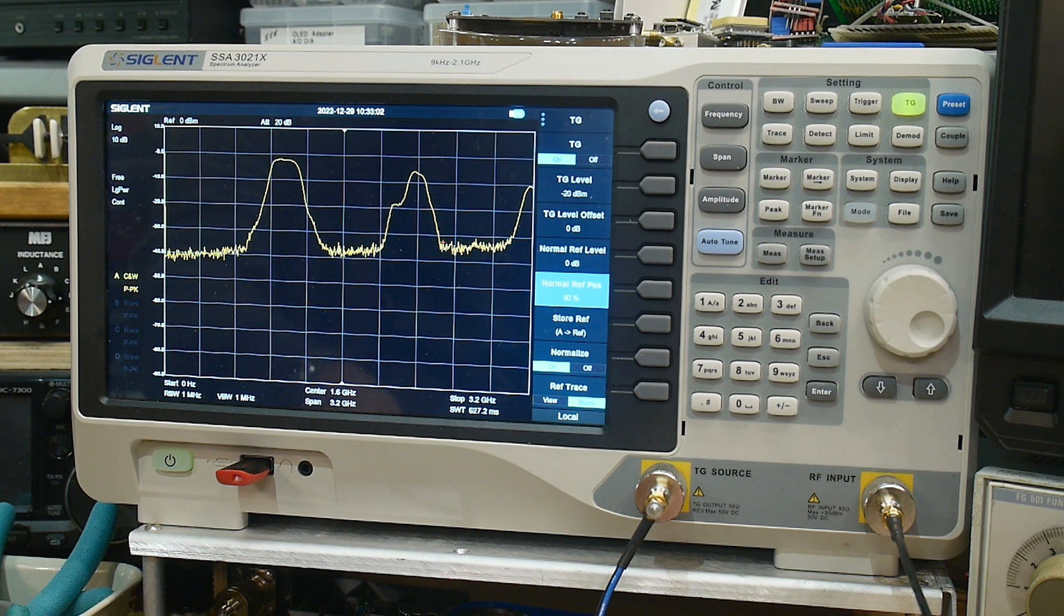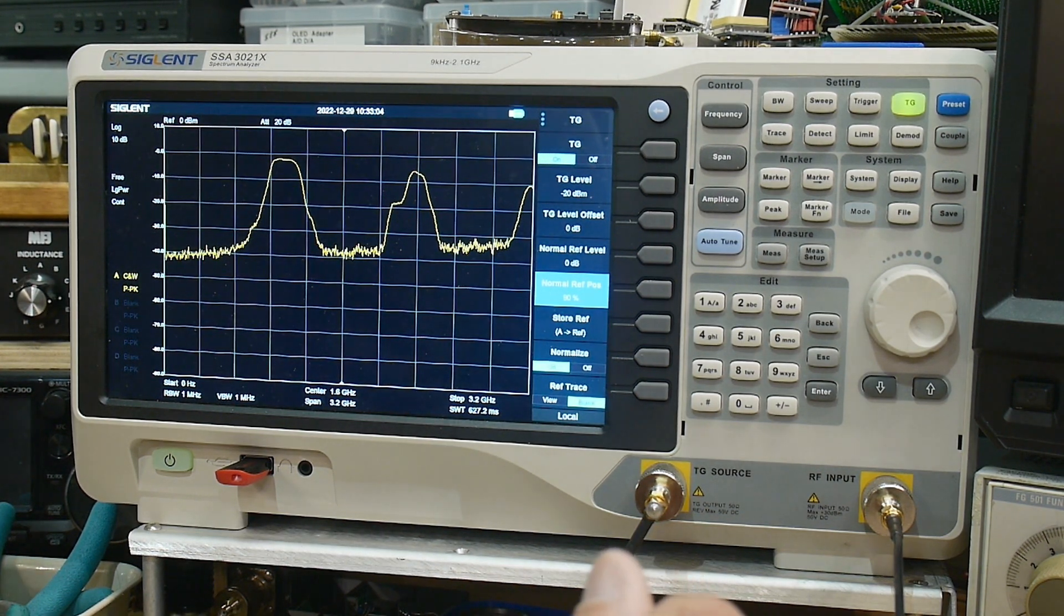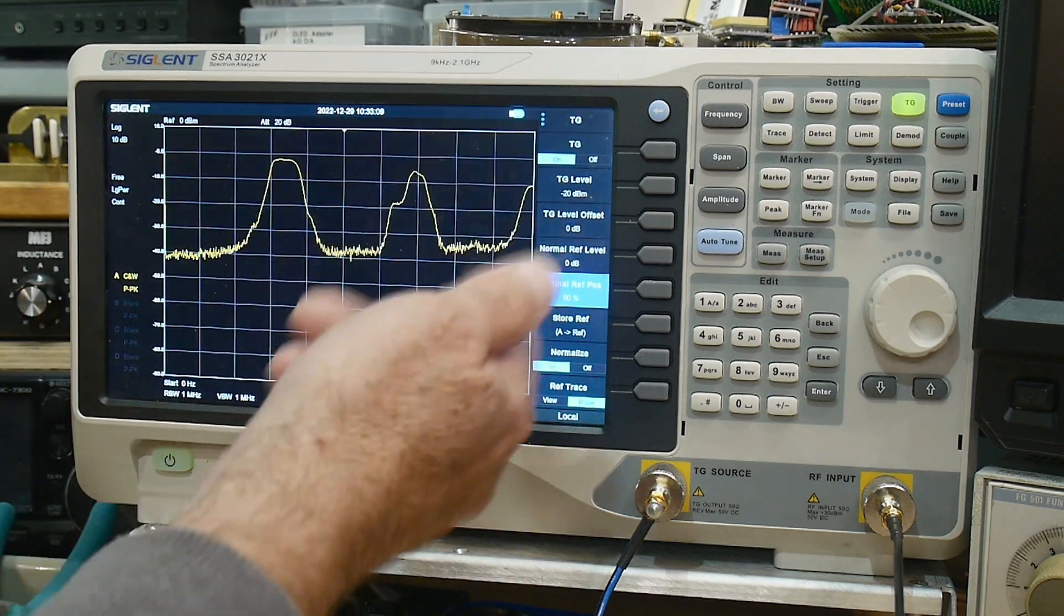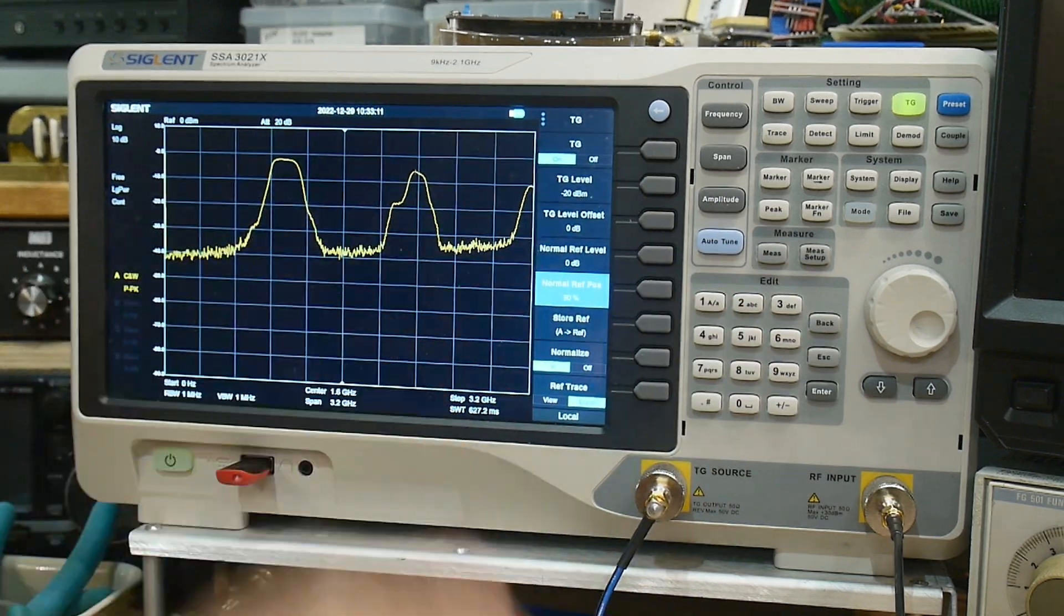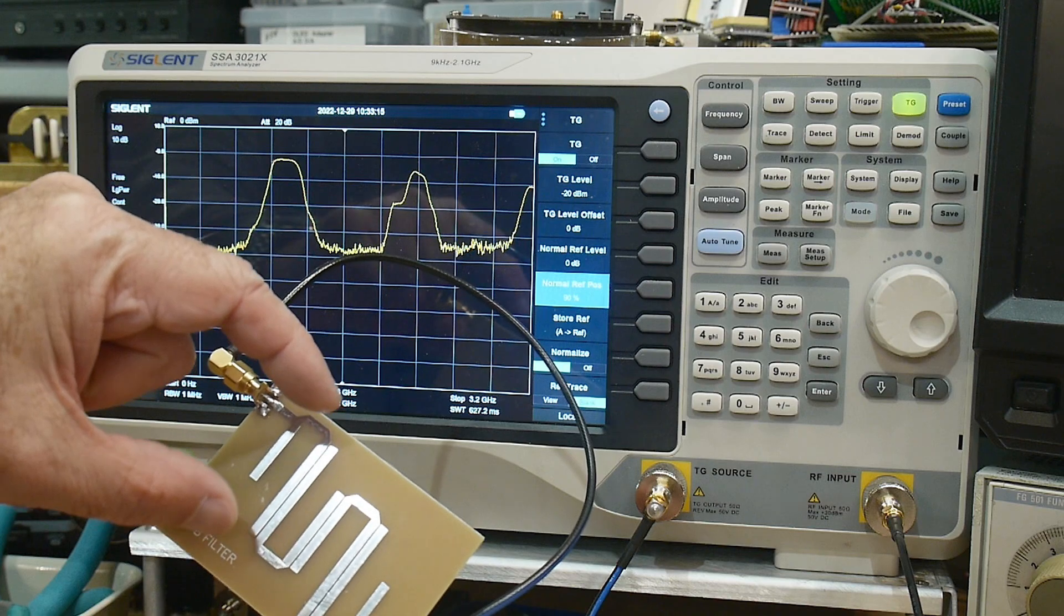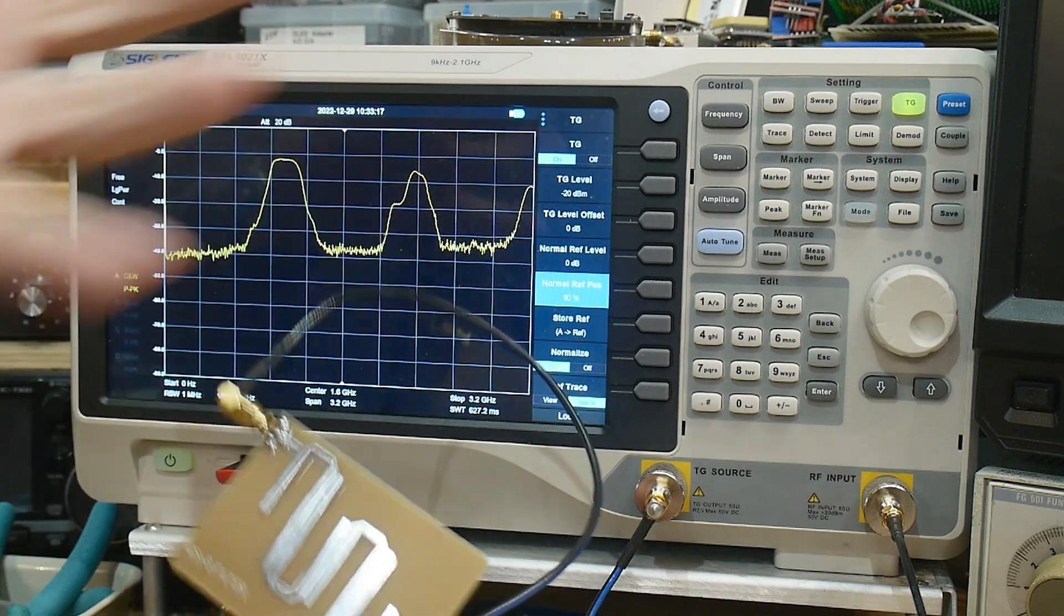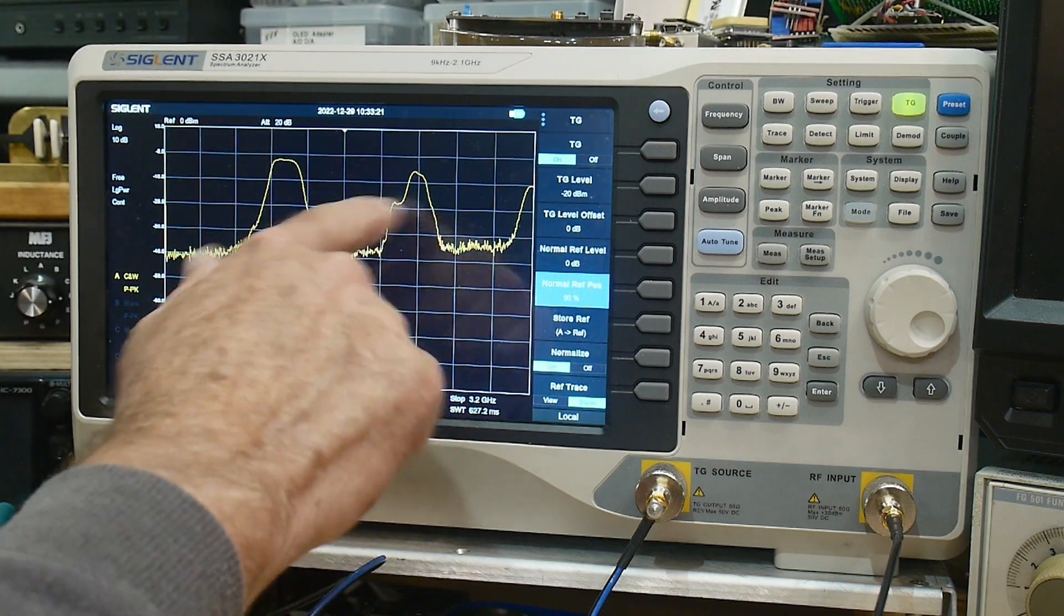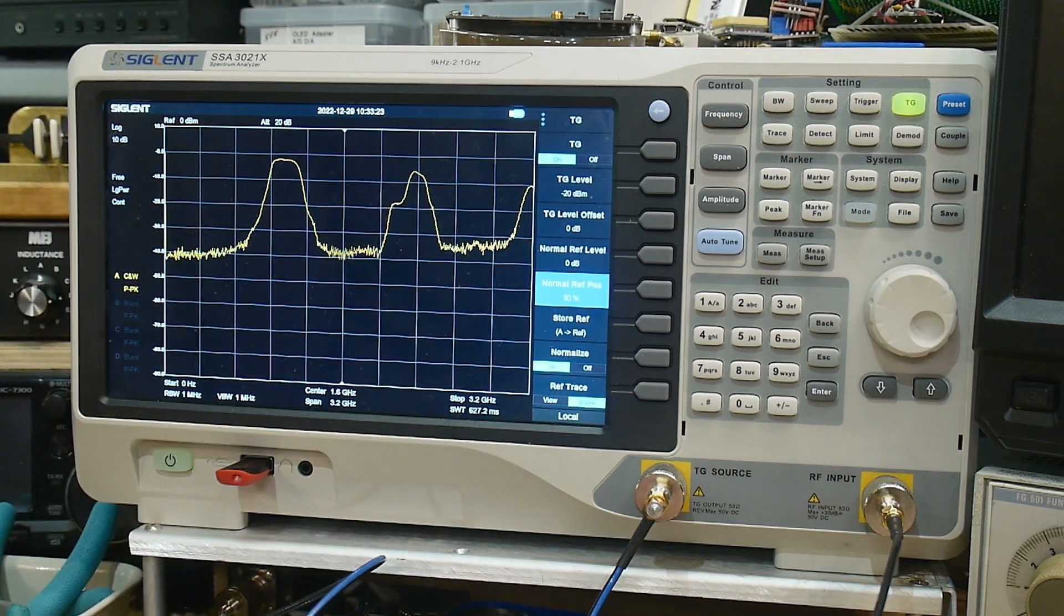And there we go. We have, this is where the filter was designed and then there's some harmonics right, because you can imagine that if one wavelength fits in here then two wavelengths would fit, three wavelengths would fit, and so there's going to be multiples of that. But this one's pretty ugly so it was designed for this one here.